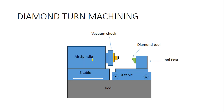Diamond turning machining — from the figure you can see that turning is done with the help of a diamond tool. The machinery is similar to a lathe, but the main difference is the vacuum chuck. Unlike the 3-jaw or 4-jaw chucks you've seen on lathe machines, the vacuum chuck doesn't grip the workpiece, so the workpiece remains indent-free.